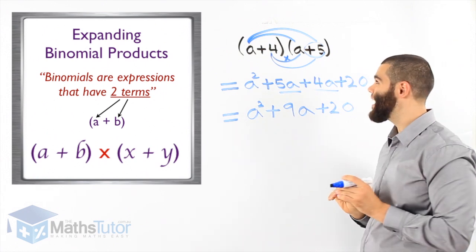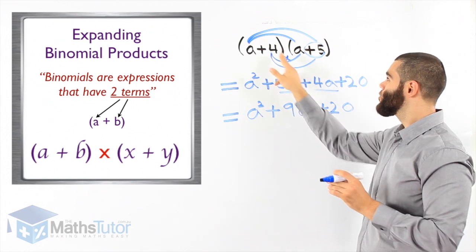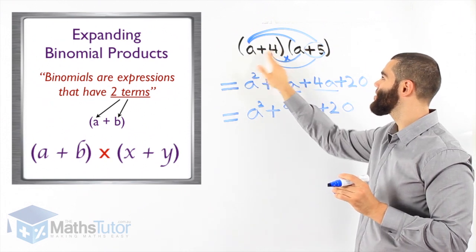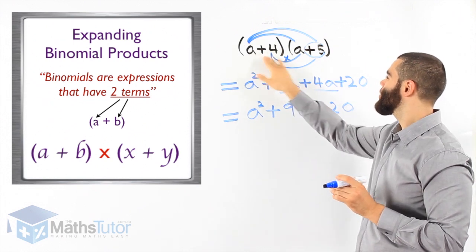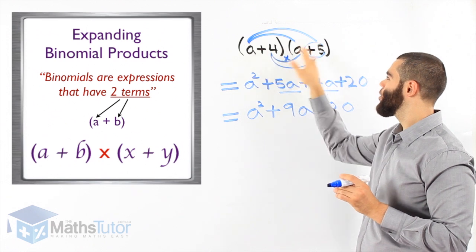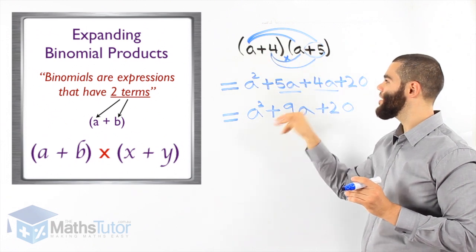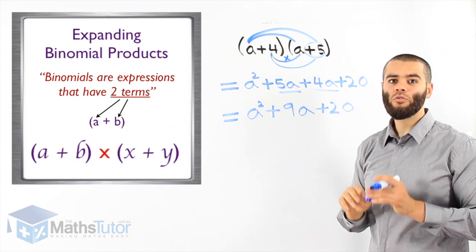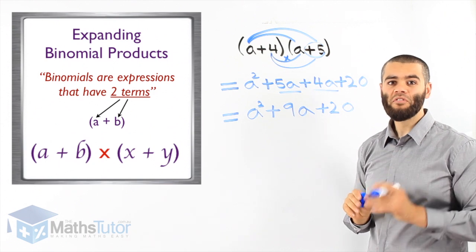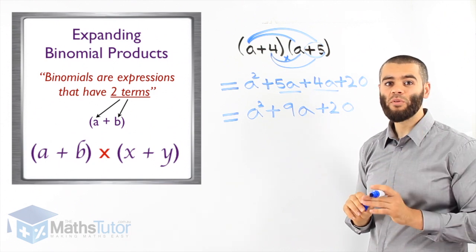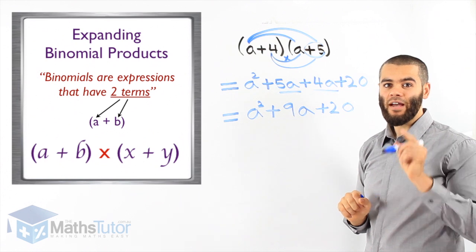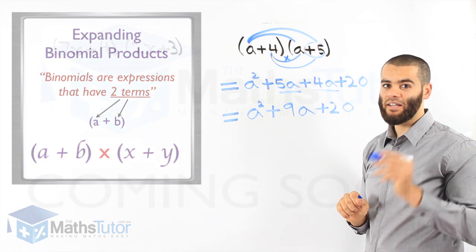So binomial products have two expressions or two terms in each expression, and we are multiplying both binomials together. We do it this way. We're going to do some more examples — the more examples we do, the better you're going to become and the faster you're going to get it.